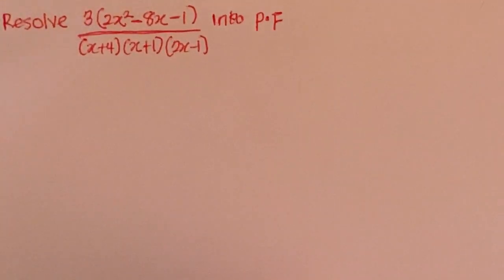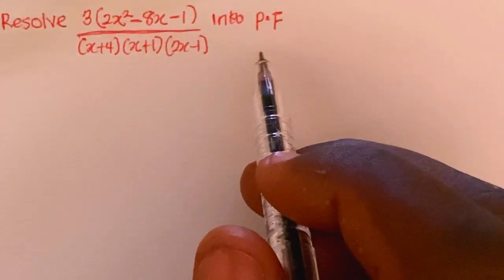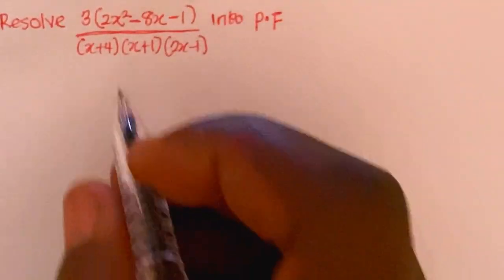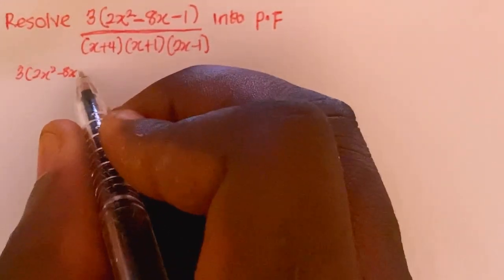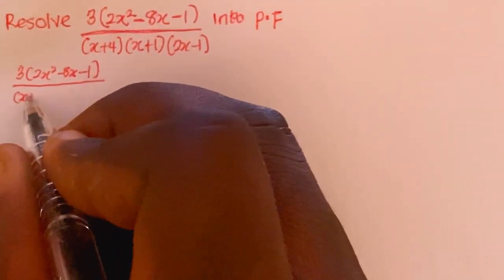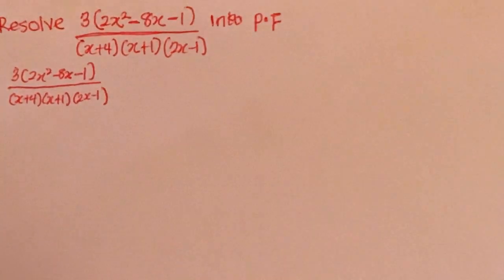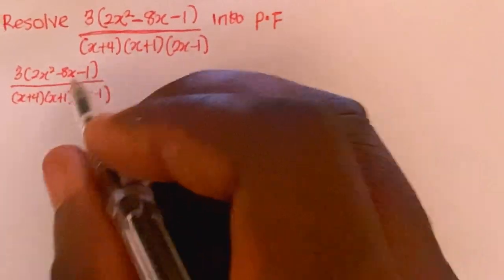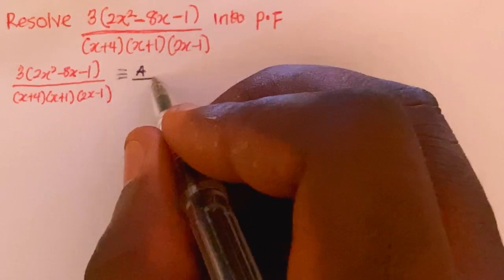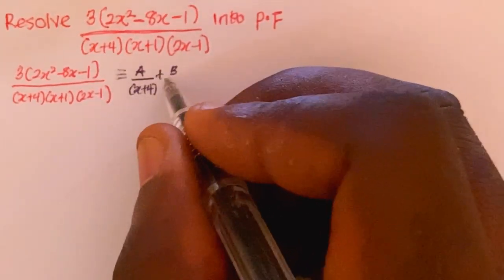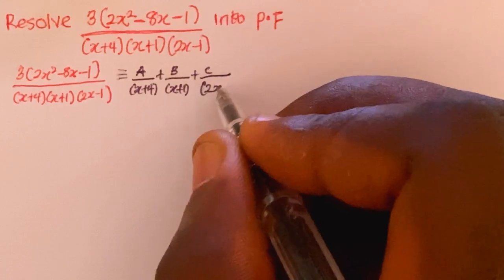Hi friends, suppose you are asked to resolve this partial fraction. I'm going to write this expression: (6x squared minus 24x minus 3) divided by (x+4)(x+1)(2x-1). Since all these are linear factors, this is equivalent to A over (x+4) plus B over (x+1) plus C divided by (2x-1).